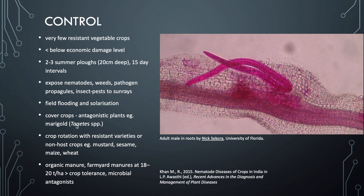Growing cover crops is a much better method, particularly when antagonistic plants are grown, such as marigold, which produces toxins that nematodes do not appreciate. Another good method is crop rotation with resistant varieties or non-host crops, though this requires knowing what those hosts are. Particular varieties that nematodes do not prefer include mustard, sesame, maize and wheat, some of which have resistance built in, so using them in rotation will reduce nematode numbers in the soil. The use of organic manure and farmyard manure at between 18 to 20 tonnes per hectare has been shown to increase crop tolerance and allow for the proliferation of microbial antagonists.